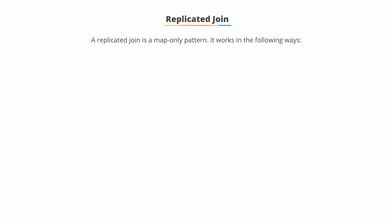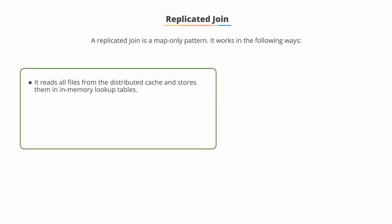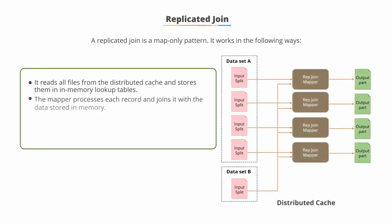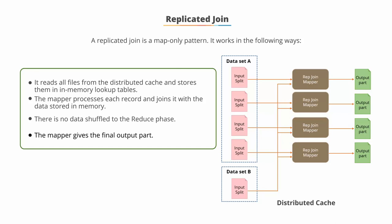Replicated joins. A replicated join is a map-only pattern — in other words, it does not use the reduce phase. It works as follows: it reads all files from the distributed cache and then stores them in in-memory lookup tables. The mapper processes each record and joins it with the data stored in memory. There is no data shuffled to the reduce phase. The mapper gives the final output. This type of join is typically very quick.